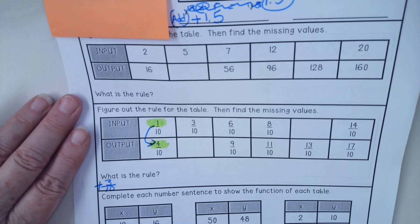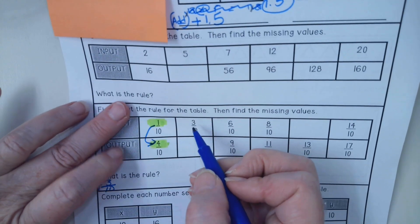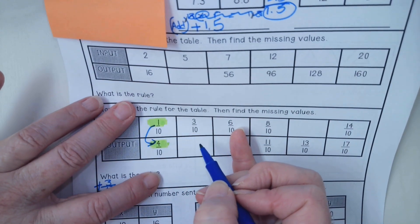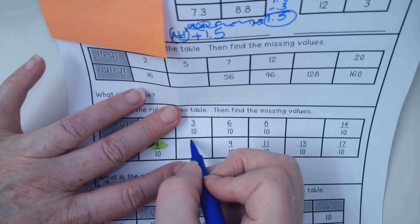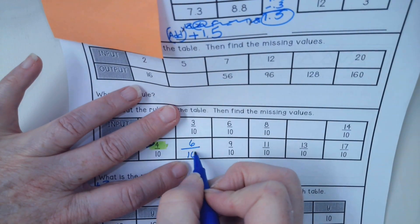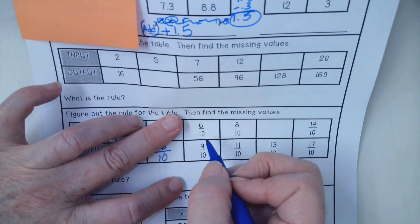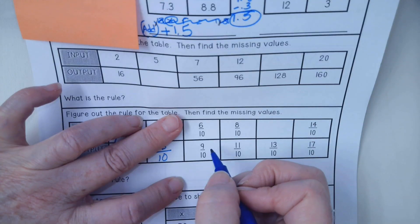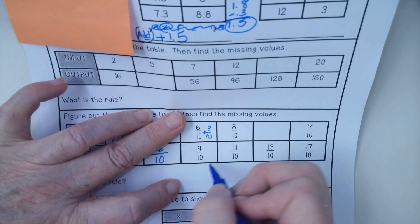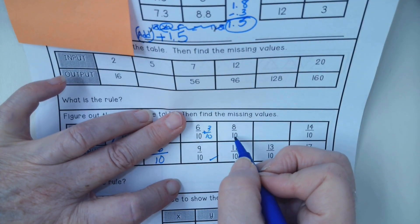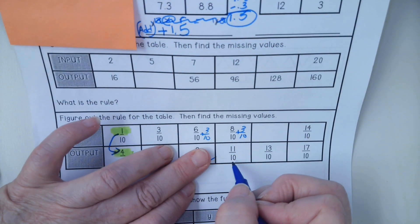Plus 3 tenths. That's going to be my first guess. So if that's the case, I'm going to say 3 tenths plus 3 tenths. What's 3 plus 3? 3 plus 3 is 6. And we don't do anything with the tenths. Let's check our next rule. 6 tenths plus 3 tenths does get me 9 tenths. That one checks out. 8 tenths plus 3 tenths does get me 11 tenths.